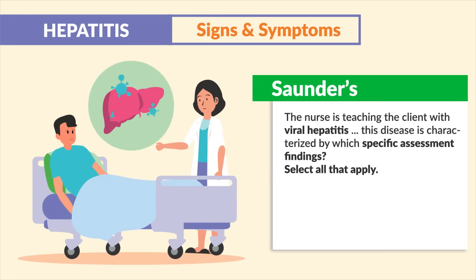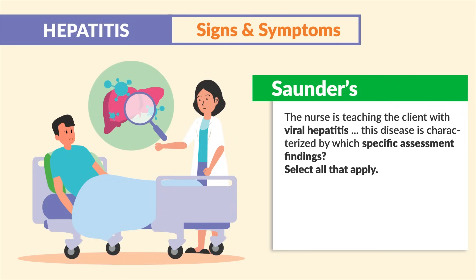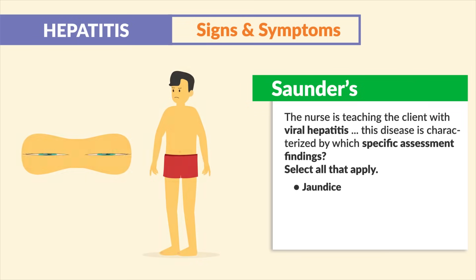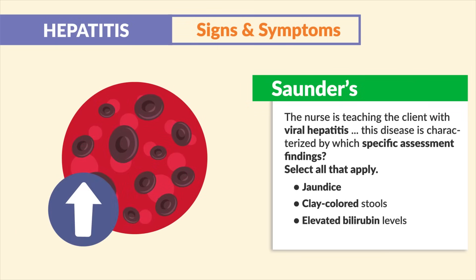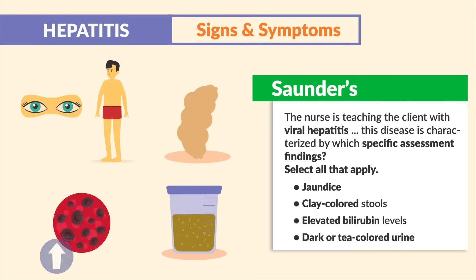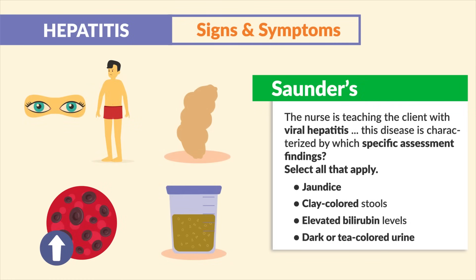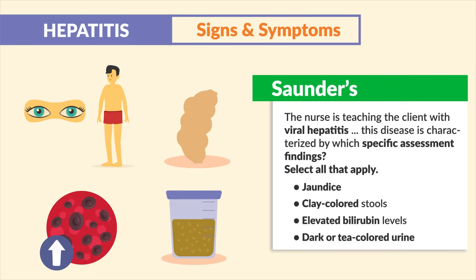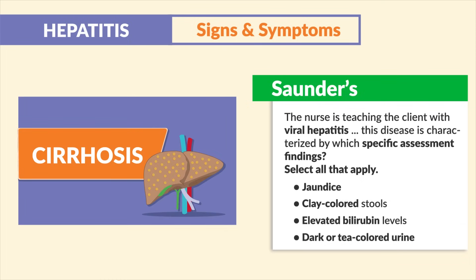A Saunders question asks: 'The nurse is teaching a client with viral hepatitis — which specific assessment findings apply?' The correct answers are jaundice, clay-colored stools, elevated bilirubin levels, and dark or tea-colored urine. All these signs stem from elevated bilirubin spilling into the bloodstream, making the body appear yellow — typical for liver disease including cirrhosis.